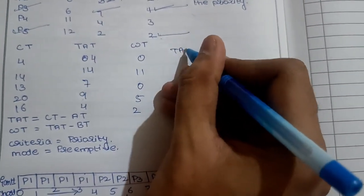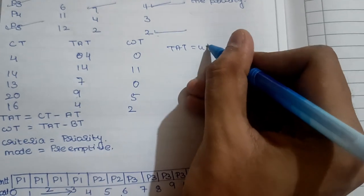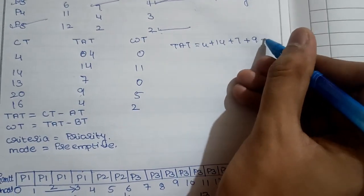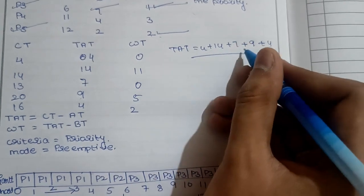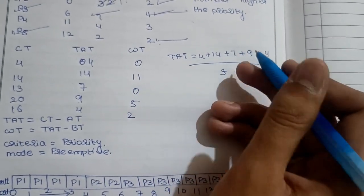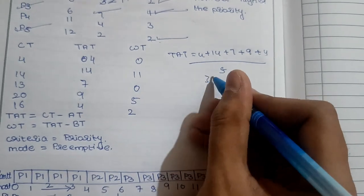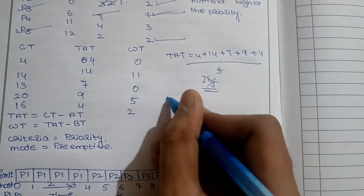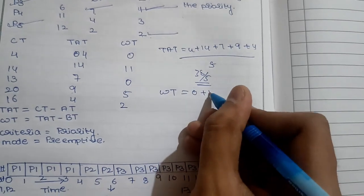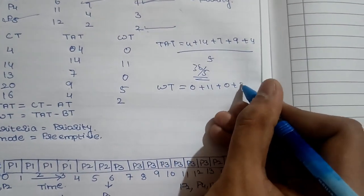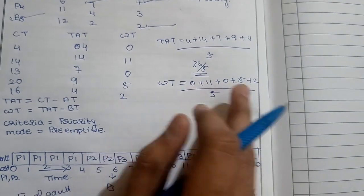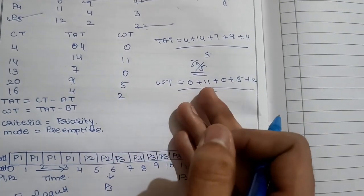Average turnaround time: 14 plus 4 plus 7 plus 9 plus 4 divided by 5 equals 38 divided by 5. Average waiting time: 0 plus 11 plus 0 plus 5 plus 2 divided by 5 equals 18 divided by 5.